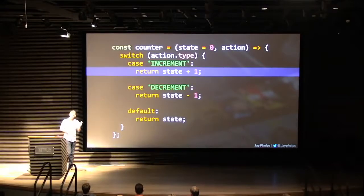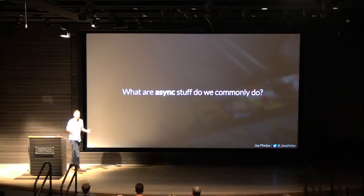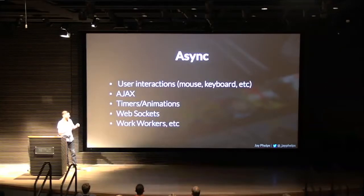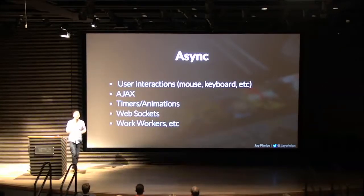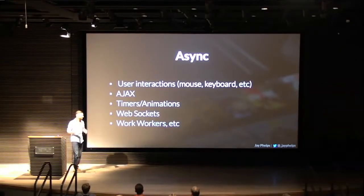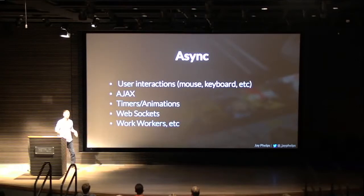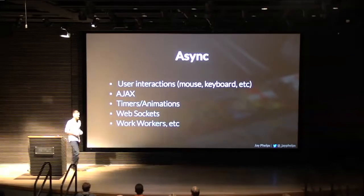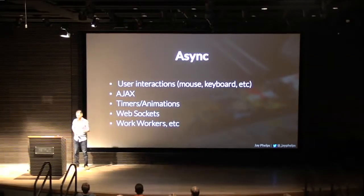So what type of async stuff do we commonly do, and why is that a problem? There's a bunch of things: user interactions, keyboard, mouse movements, Ajax — probably the bread and butter of what most people know — timers, web sockets, and all sorts of stuff. This is not an exhaustive list.